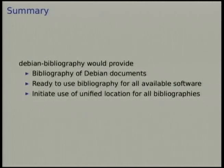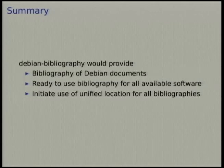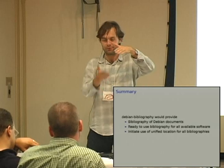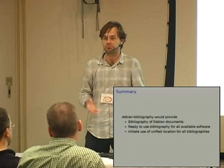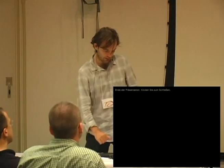You create this tailored bibliography once when you start writing a publication and then you're done - there should be a function to update it later. That's pretty much it. This package - which doesn't even have an ITP yet because we wanted to discuss first - will provide bibliography of Debian documents, ready-to-use bibliography for all available software once we put that information into copyright files, and will initiate use of the unified location usr/share/bib for all bibliographies.